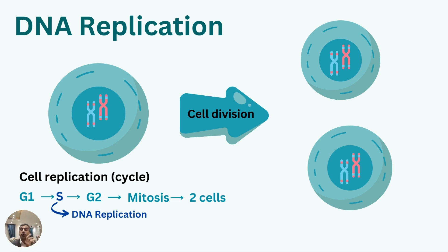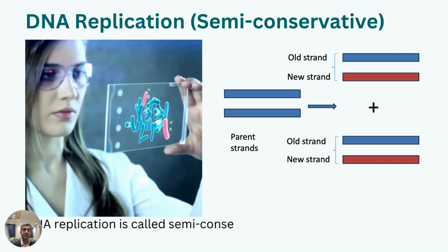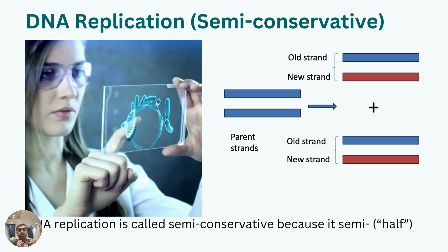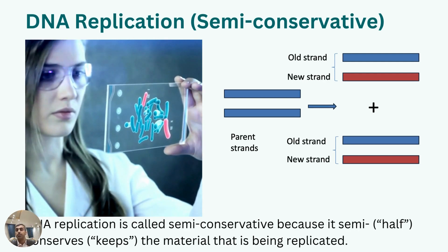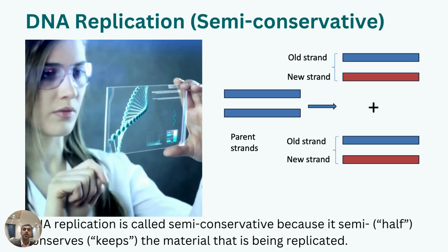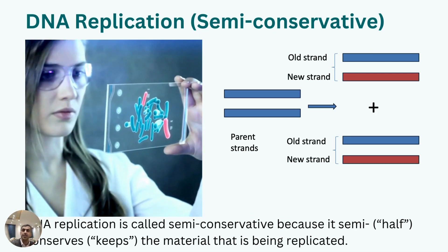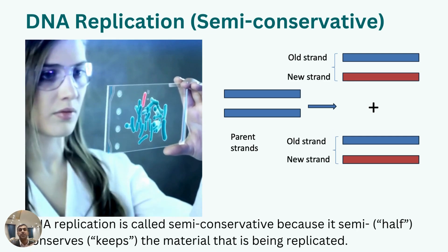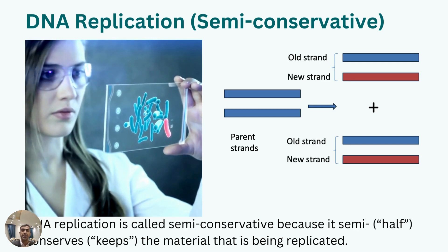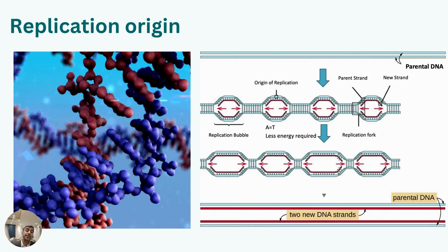In S phase, one chromosome becomes two, and one double-stranded DNA becomes two. Before looking at where replication takes place, it's important to note that DNA replication is called semiconservative. Semiconservative replication is a mechanism in both prokaryotic and eukaryotic cells in which each newly synthesized DNA molecule contains one old parental strand plus one newly synthesized strand. This concept was proposed by Watson and Crick, based on the earlier work by Franklin and Meselson in the 1950s.